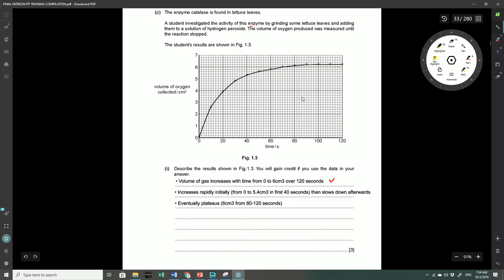Let's go through a couple of these questions and I'll go through how I would have answered them. This question here is about the enzyme catalase that you find in lettuce leaves. A student investigated the activity of the enzyme by grinding some lettuce leaves and adding them to a solution of hydrogen peroxide. The volume of oxygen produced was measured until the reaction stopped, and this was plotted on the graph where you've got the volume of oxygen collected on the y-axis with time plotted on the x-axis. They ask you to describe the results shown in figure 1.3 and you will gain credit if you use data in your answer.